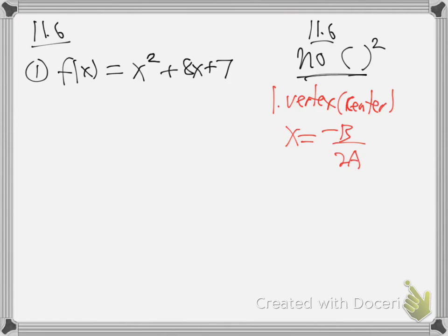What does negative b over 2a look like? That's like the beginning of the quadratic formula, right? Remember the quadratic formula is negative b plus or minus the square root of blah blah blah, all over 2a? It's the part without the plus or minus root - it's the quadratic formula without the plus or minus root. Just trying to help you remember it. You can put it on your three by five card.